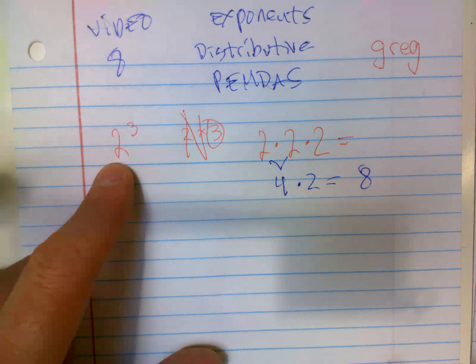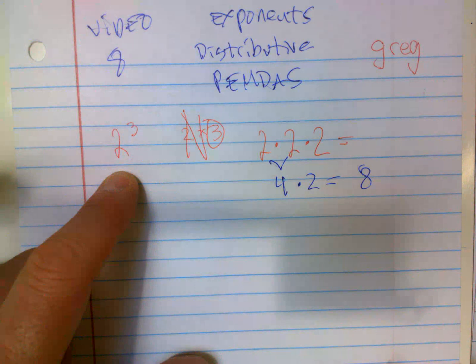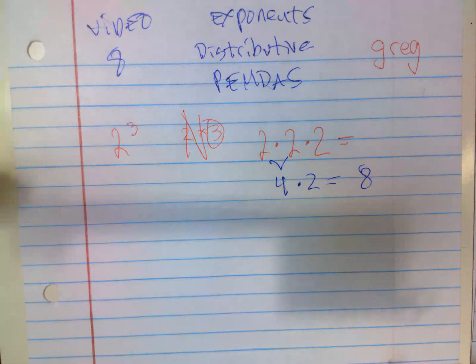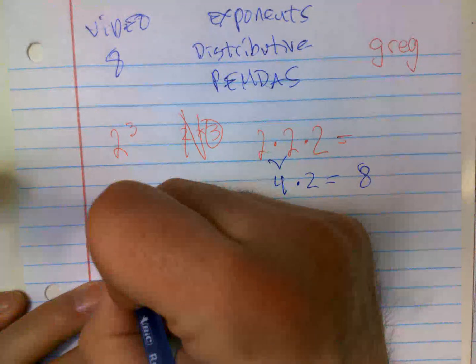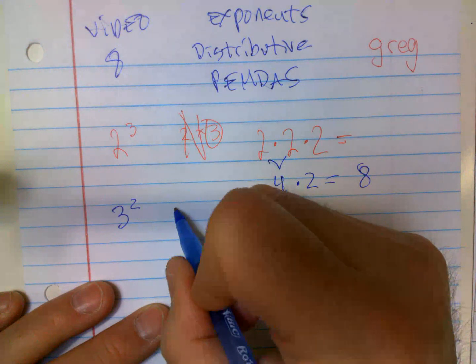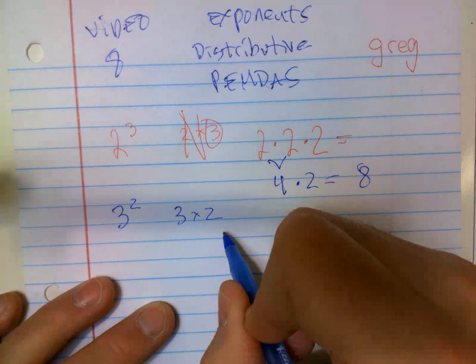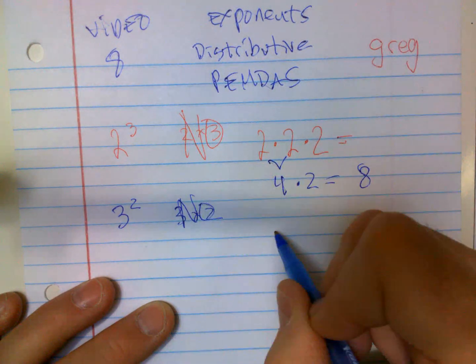See the difference? Six. A lot of people run with that six, guys. They do 2 to the third power and 3 to the second power and people put 6. 3 to the second power is not 3 times 2 equals 6. That's 3 times 3, which equals 9.